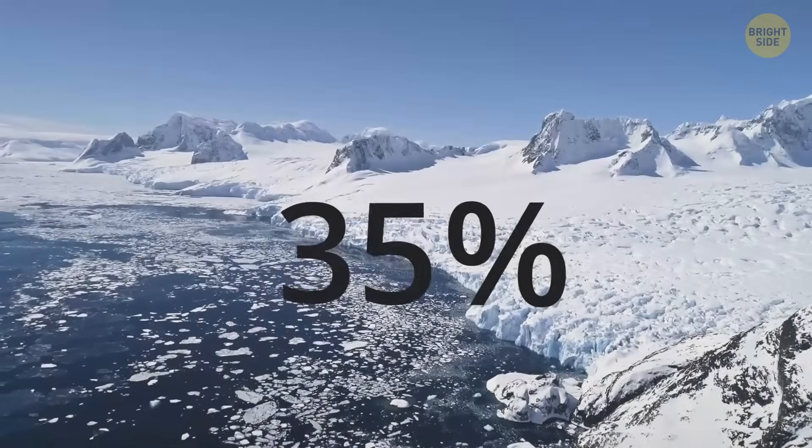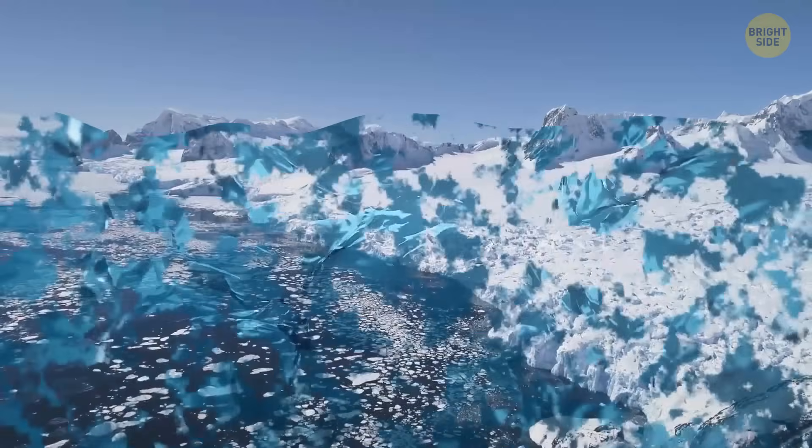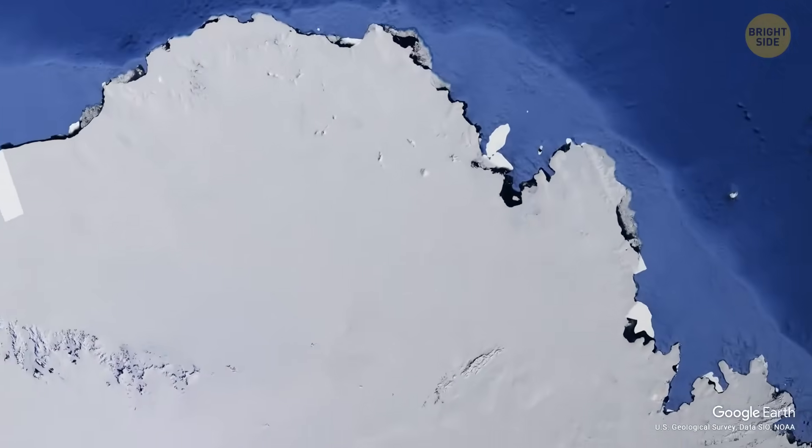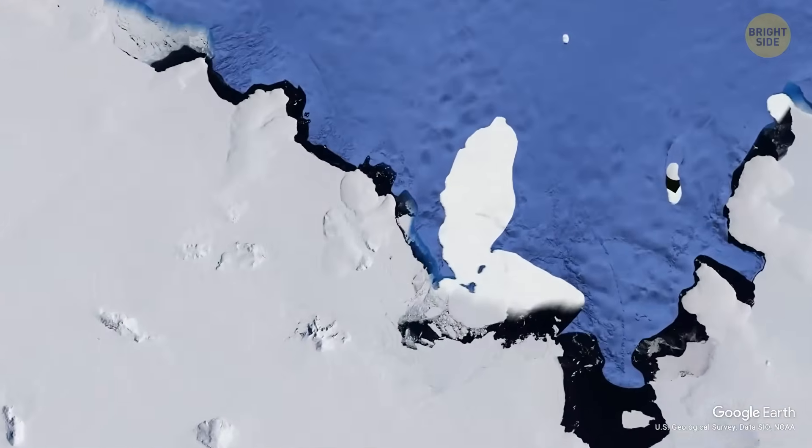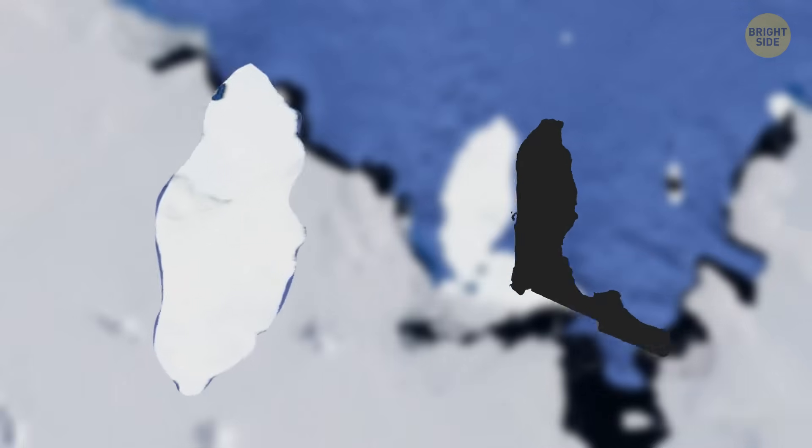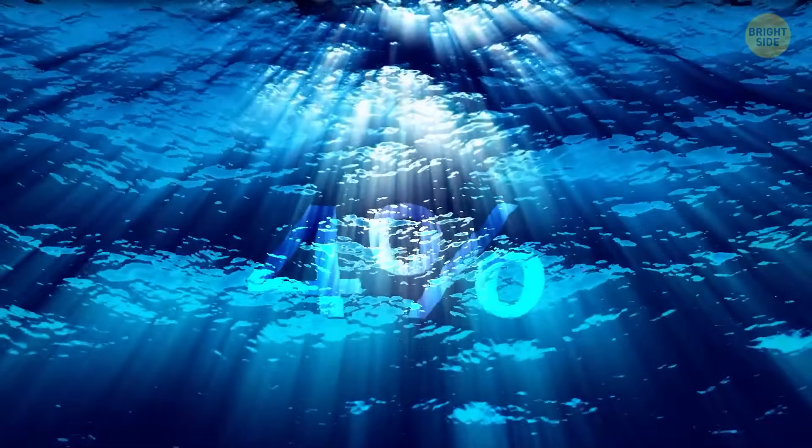Antarctica holds about 60% of our entire planet's freshwater, which means it would be pretty bad if it melted. For example, there's this Doomsday Glacier, officially known as Thwaites Glacier. It's a huge ice formation, about the size of Florida, and it's melting right now. Every year, the sea levels rise by 4% because of it.